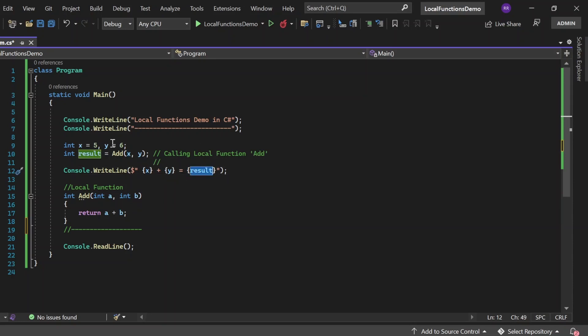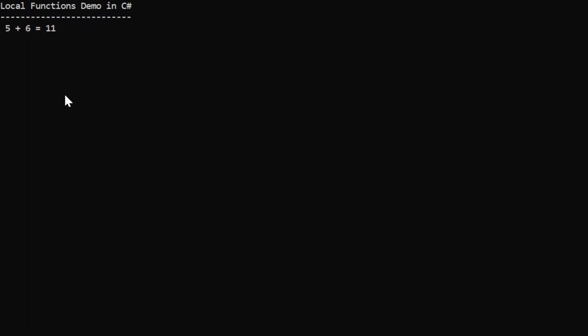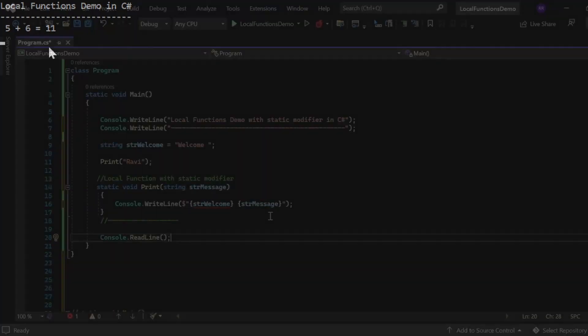Then in the next console.WriteLine statement I'm printing 'x plus y equals result,' where result is the output we received from the local function after the operation. Let me execute this and see the output. The output appears in the console window: 5 plus 6 equals 11, which is what we're expecting.